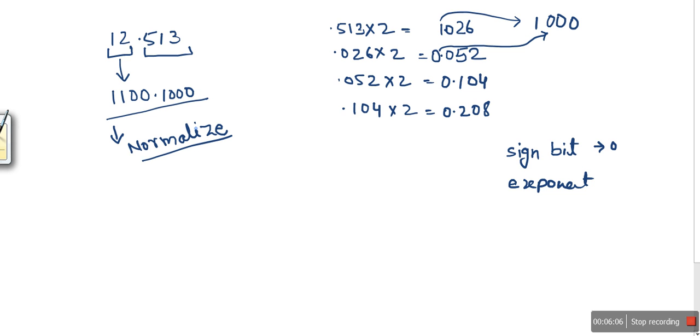What is the meaning of normalization? The meaning of normalization is that we need to shift this point in such a way that before this point there will be one non-zero digit. So in order to normalize this number, we need to put this point here because before this point we need only one non-zero digit.